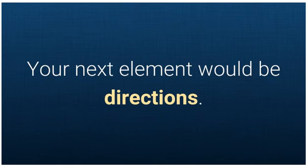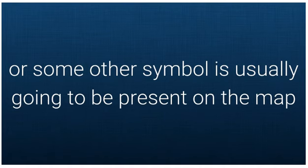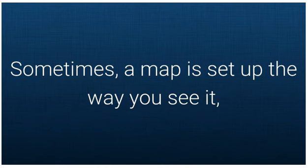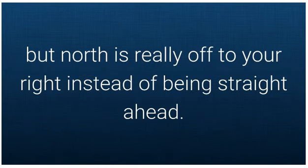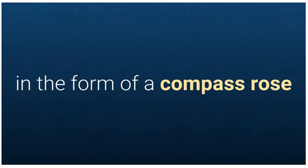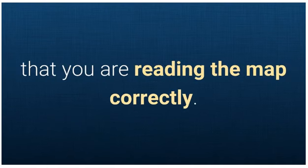Your next element would be directions. A compass rose, which looks similar to this, or some other symbol, is usually going to be present on the map to indicate the cardinal directions of north, south, east, and west. Sometimes, a map is set up the way you see it, but north is really off to your right instead of being straight ahead. So having the cardinal directions on the map in the form of a compass rose or some other symbol is helpful to make sure that you are reading the map correctly.